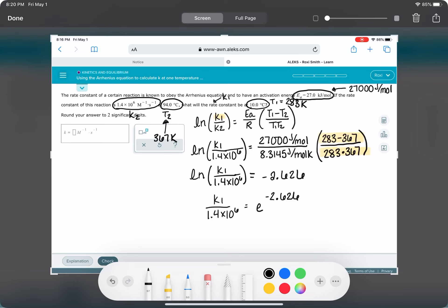And we get K1 over 1.4 times 10 to the 6 is equal to 0.0723. And so now you should feel good about solving for K1.